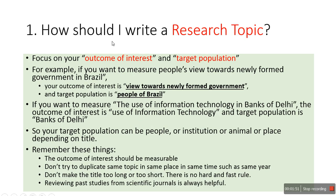The first question is: how should I write a research topic? In any subject, when you are writing a research topic, you should focus on two major things: one is the outcome of interest, and another is the target population. For example, if you want to measure people's perception towards the newly formed government in Brazil, then your outcome of interest is the view towards the newly formed government — that is what you want to measure.